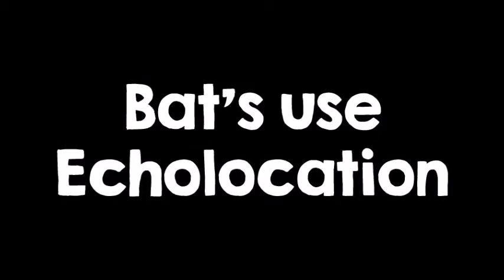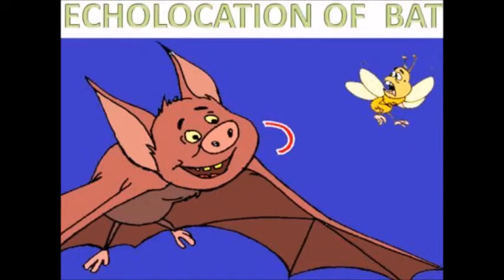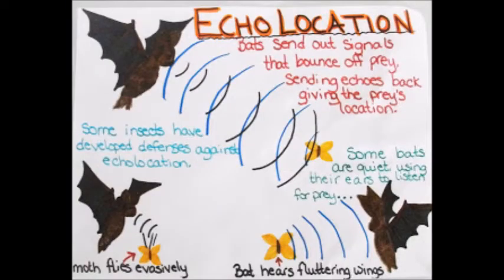The second fact is that bats use echolocation. What is that? That is how they see. Look at this picture — this bat is using echolocation to locate the bee. Echolocation is when bats send out signals that bounce off their prey and send signals back, giving the prey's location. It can tell how big, how fast, and where they are located.